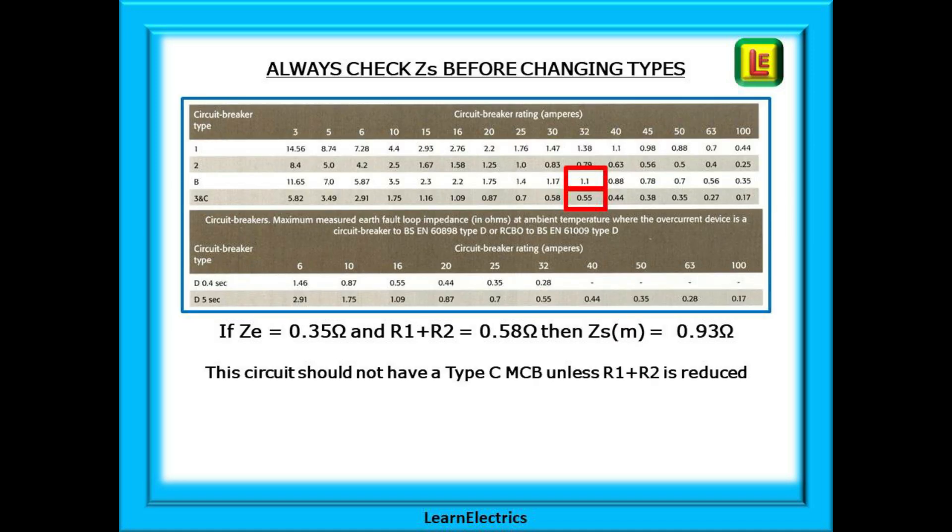Look at this example where we have a 32 amp MCB type B installed. In this circuit ZE is 0.35 ohms and the internal R1 plus R2 is 0.58 ohms. Add the two together and our ZS M is 0.93 ohms and this is fine for a B type. If we wanted to change to a C type then the maximum ZS would be 0.55 ohms for that circuit. We cannot install a 32 amp type C MCB without first reducing the ZS to 0.55 ohms or less.